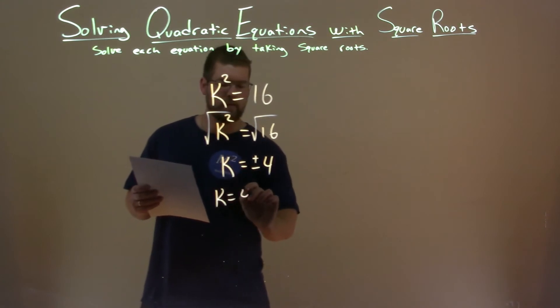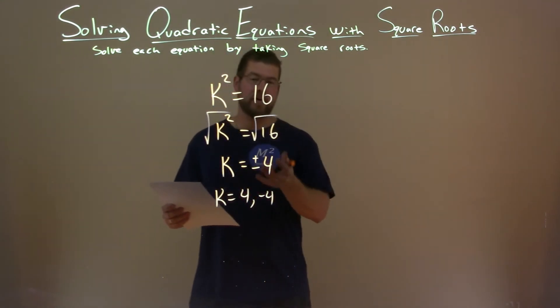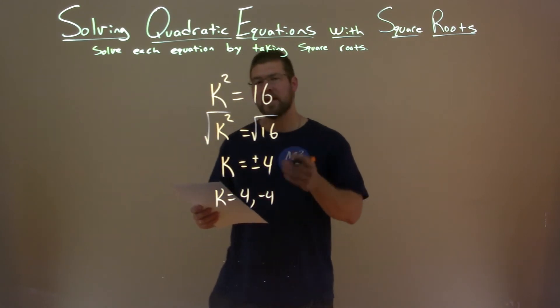So we can write it like this if you want, k equals 4 and negative 4. But there we actually have our final answer, k is equal to 4 and negative 4.